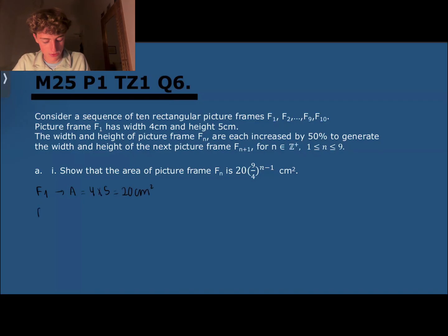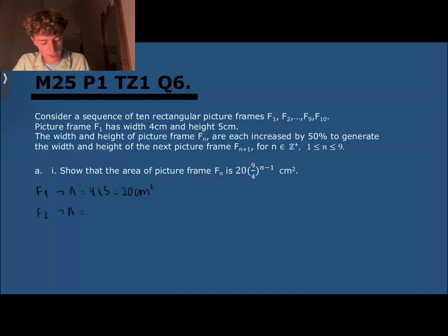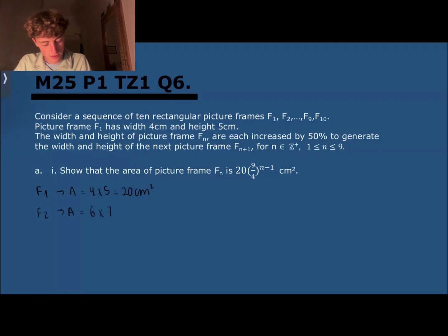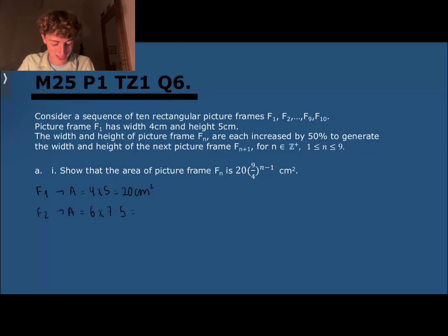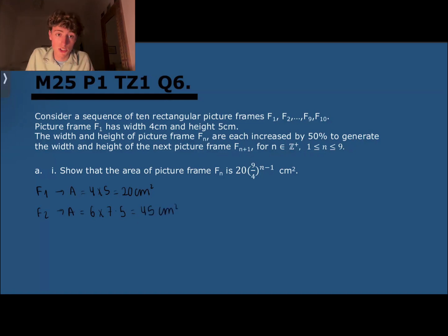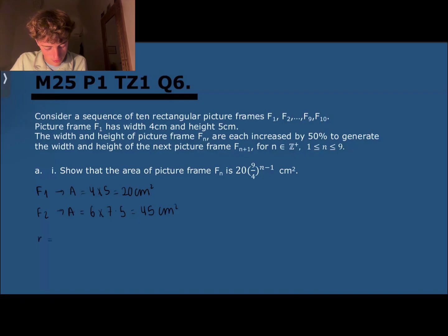f2 is going to have a width of 4 times 1.5, so 50% more, which is 6, and a height of 5 times 1.5, which is 7.5. That gives an area of 45 centimeters squared. So now we can calculate the ratio for the area — the area is increasing with ratio 45 over 20, which is f2 over f1.